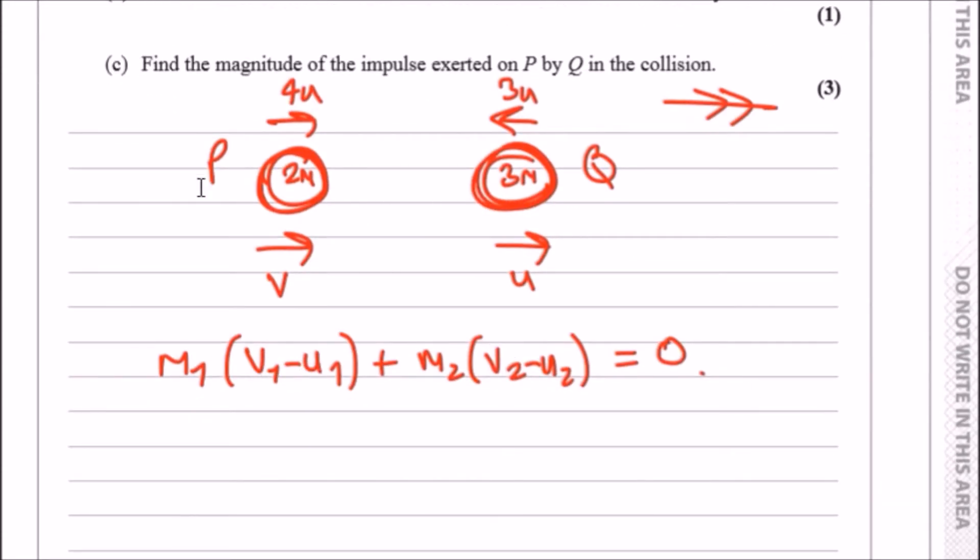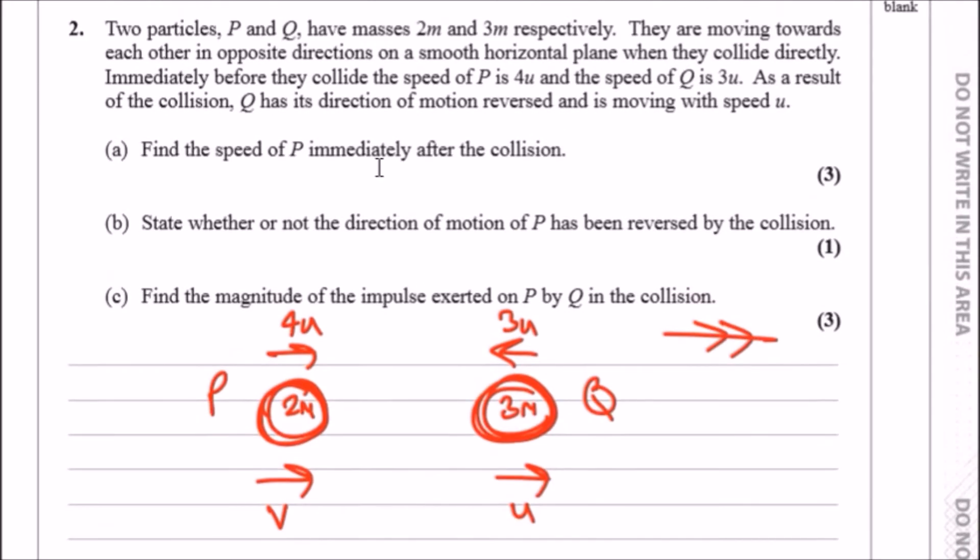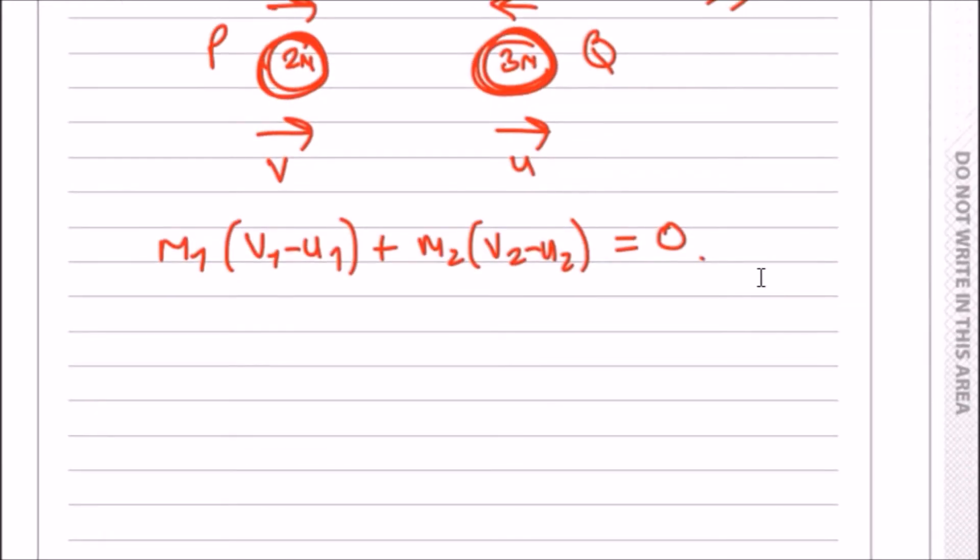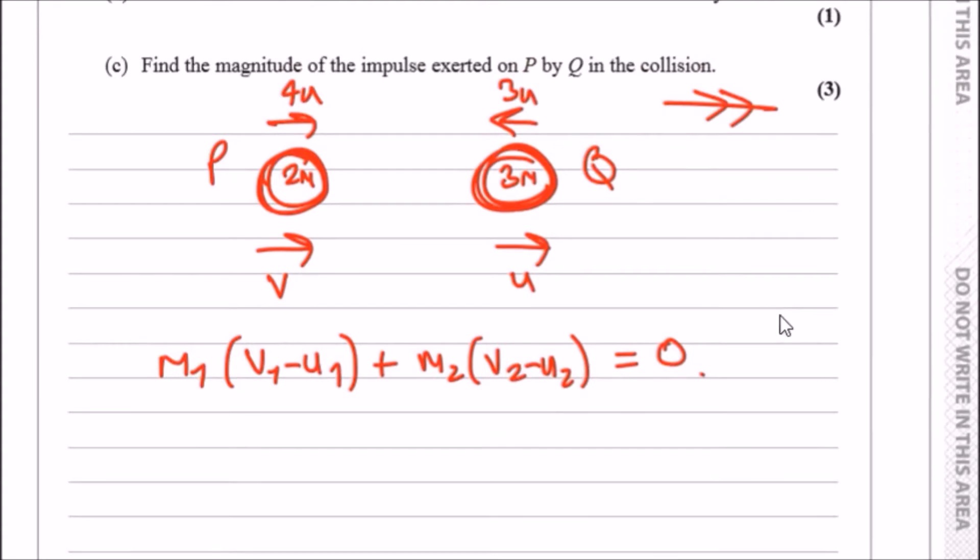There are other forms that you're familiar with, but I generally use this one because it reminds me that the sum of the impulses must eventually equal zero. Now all you do is literally just plug in and make an expression for the speed of P.